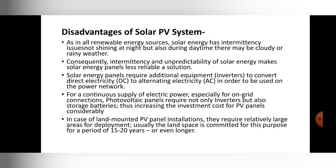The next disadvantage is that solar energy panels require additional equipment — specifically an inverter — to convert direct current to alternating current in order to be used on the power network. This additional equipment raises the initial cost. Furthermore, for a continuous supply of electric power, especially for off-grid connections, photovoltaic panels require not only an inverter but also storage batteries, thus increasing the investment cost. The initial or investment cost is therefore higher due to the additional equipment such as inverters and batteries.